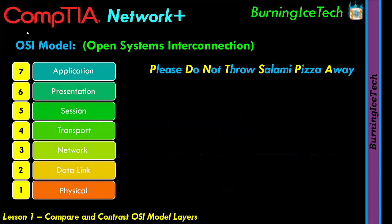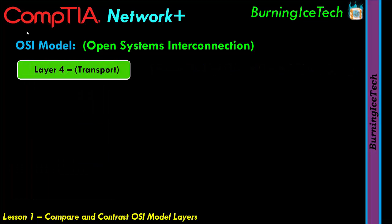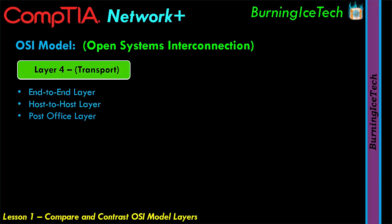Layer four is the transport layer. The first three OSI layers are primarily concerned with moving frames and datagrams between nodes and networks. At the transport layer — also known as the end-to-end or host-to-host layer — the contents of packets become significant. One function of the transport layer is to identify each type of network application by assigning it a port number. For example, data from an HTTP web application is identified as port 80. This layer can also be called the post office layer, as it describes how and where data is delivered.